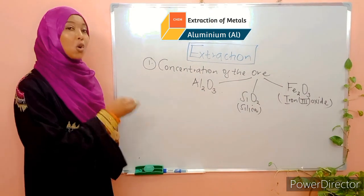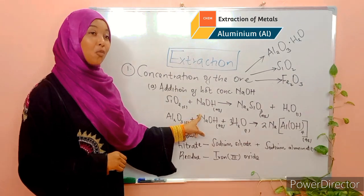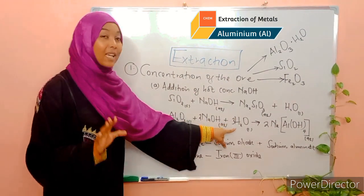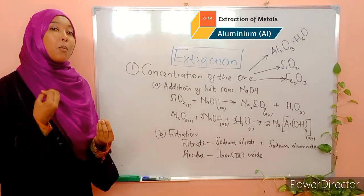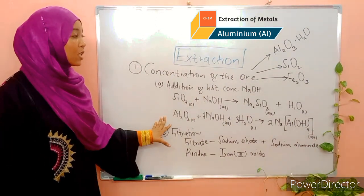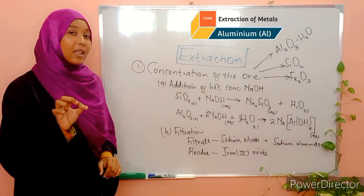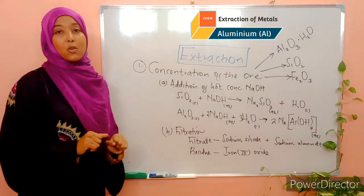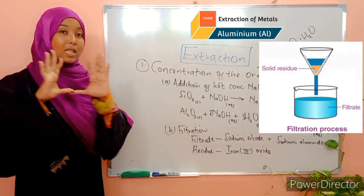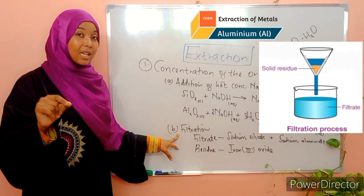Here are our equations. Silica reacts with sodium hydroxide to form sodium silicate. Aluminium-3-oxide reacts with sodium hydroxide — and remember, bauxite is hydrated aluminium-3-oxide, so it contains water of crystallization — leading to the formation of sodium aluminate. As you can tell from the state symbols, these are soluble salts. Iron-3-oxide does not react with sodium hydroxide, so it can simply be separated out through filtration as the residue. The filtrate is going to contain the sodium silicate and the sodium aluminate.